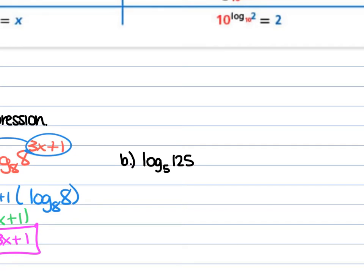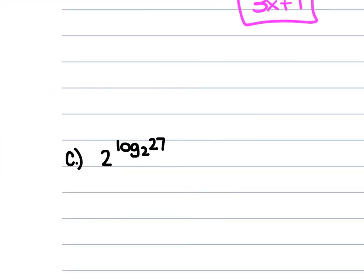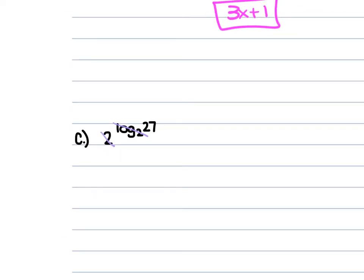For B, we have log₅ of 125. This is just 5 to what power is 125? 5 to the third power equals 125, so 3 is our solution. For C, we have 2 to the power of log₂ of 27. The 2 cancels out the log₂ because they have the same base, so the answer is just 27.